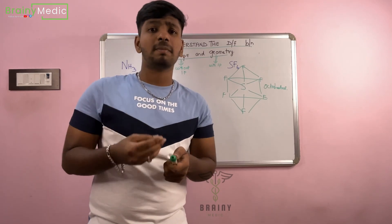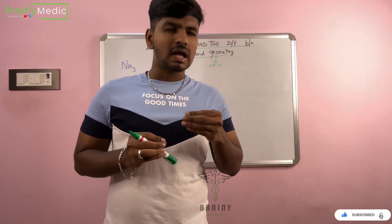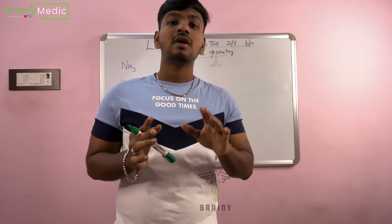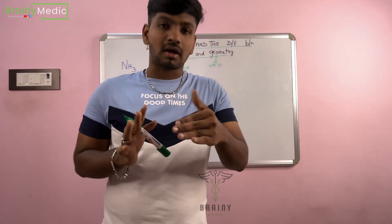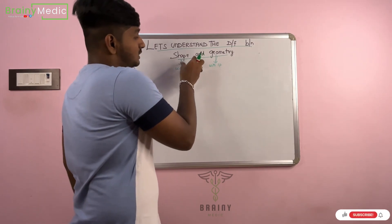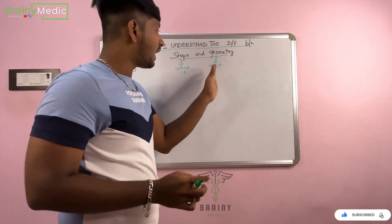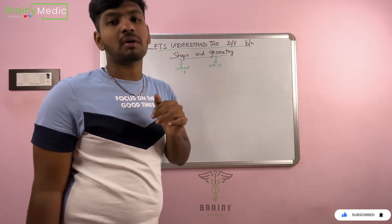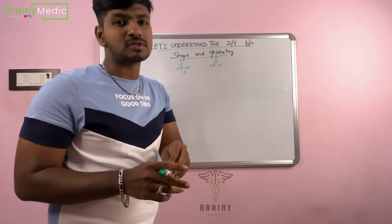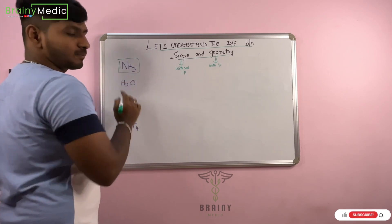Now we have the difference between shape and geometry. Shape and geometry — let me explain. Shape: we can see the shape without the lone pair. Geometry is with the lone pair. Let's take an example — here is NH3.